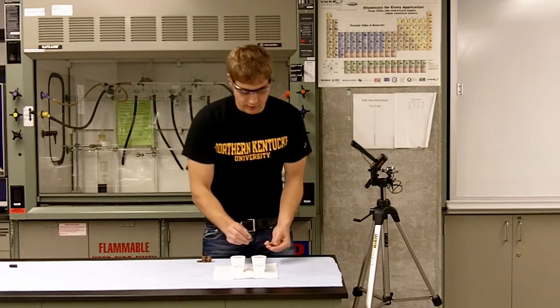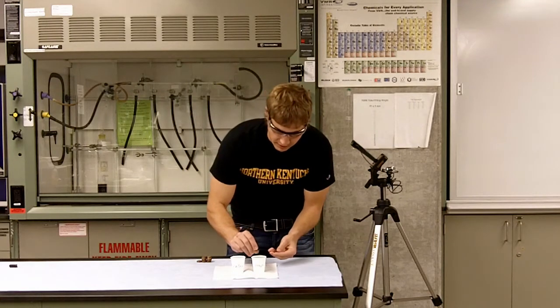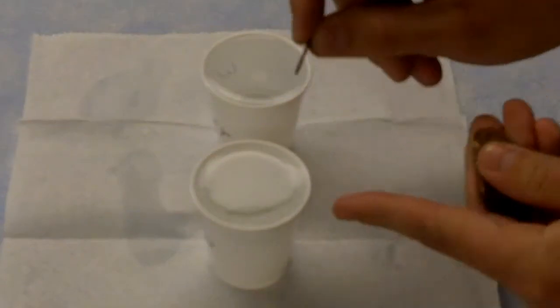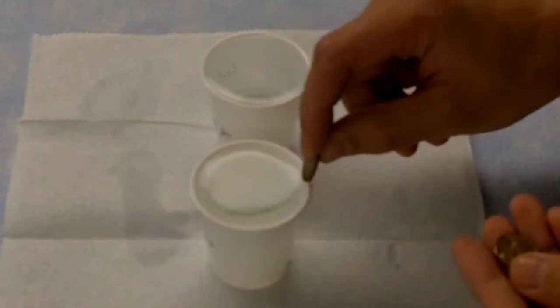So what we're going to do is count the amount of pennies that can be added. We're going to add them in carefully just to make sure we don't splash the water through adding the penny.